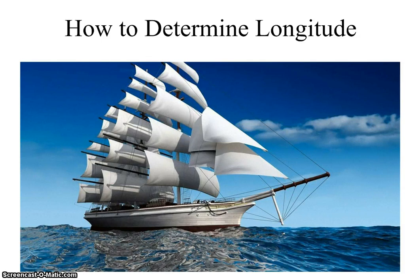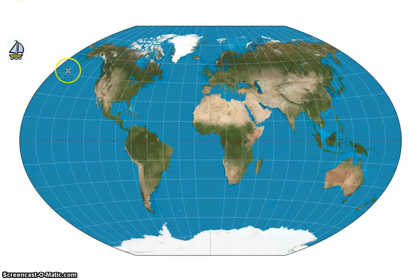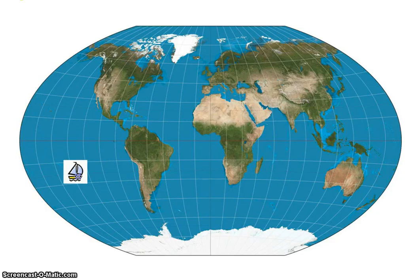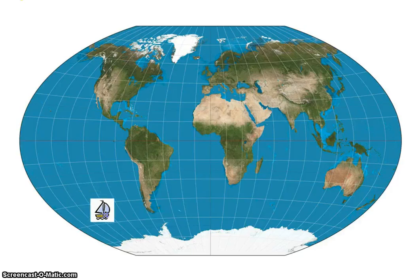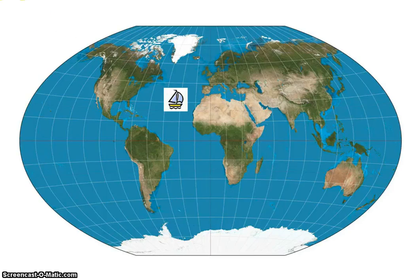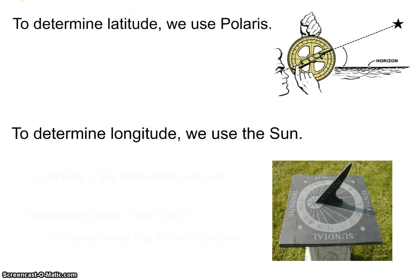Imagine you're a sailor in the 1600s or 1700s trying to figure out where you are as you're traveling from one continent to another. You don't have a smartphone, GPS, or Google Maps — nothing in terms of modern technology to help you. To find your latitude, we use the star Polaris: we measure how many degrees Polaris is above the horizon, and that number is our latitude.